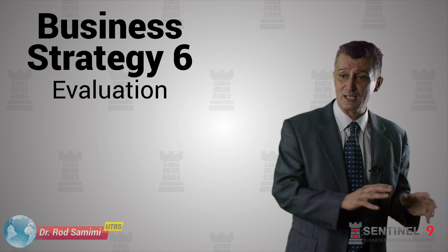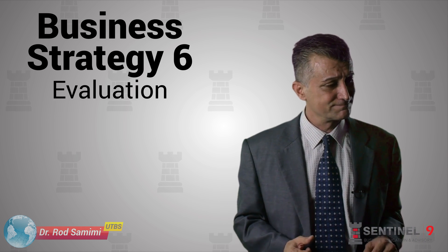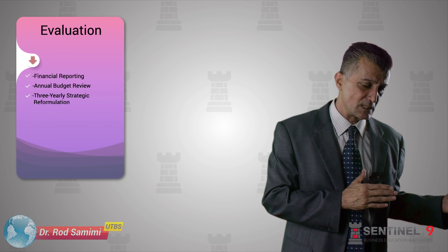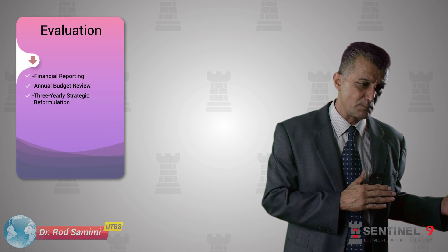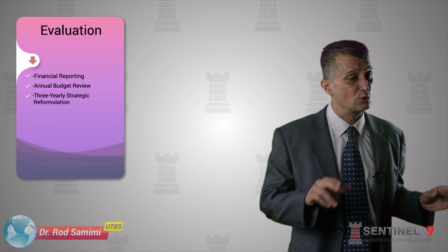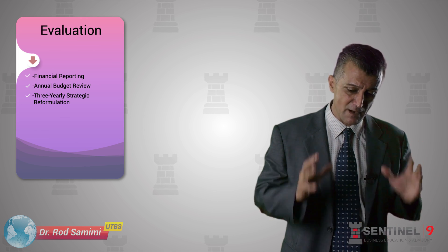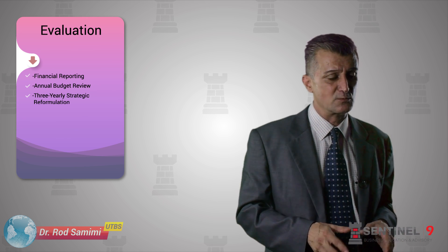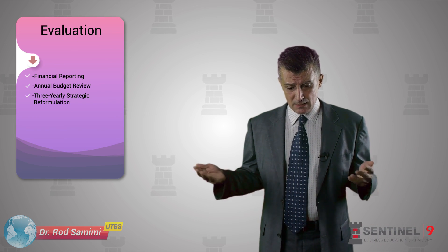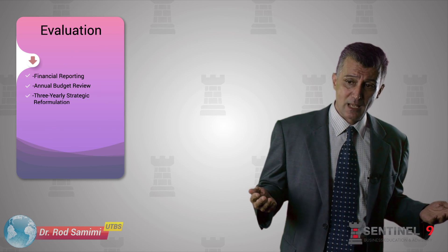Let's stick with the corporate level. How do we evaluate? As mentioned in the section on implementation, the processes in business and commerce are closed-loop, self-correcting processes. That's very prominent in this section on evaluation, where you go back and check things in the context of: is the direction the same, and what happened?